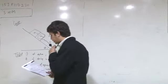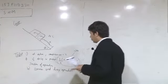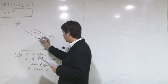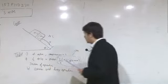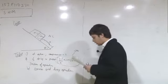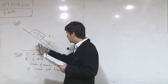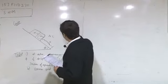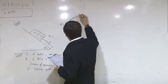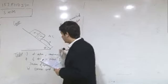Hello dear students, today we are going to discuss question code 15 JP110230. What is given in this question is that there are two blocks m1 and m2, and there is a spring of spring constant k. m1 is connected while m2 is free to move.